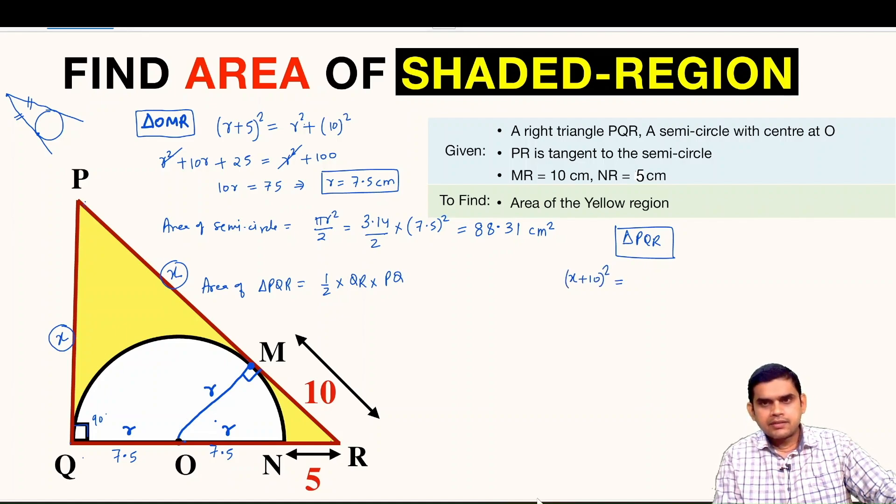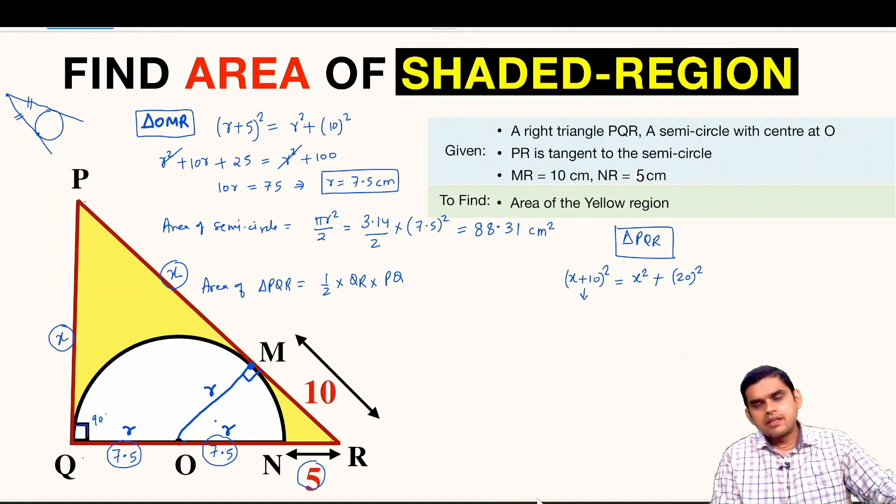Now we will expand this using (A + B) whole square identity. So this will give us x square plus 20x plus 100 is equal to x square plus 400.